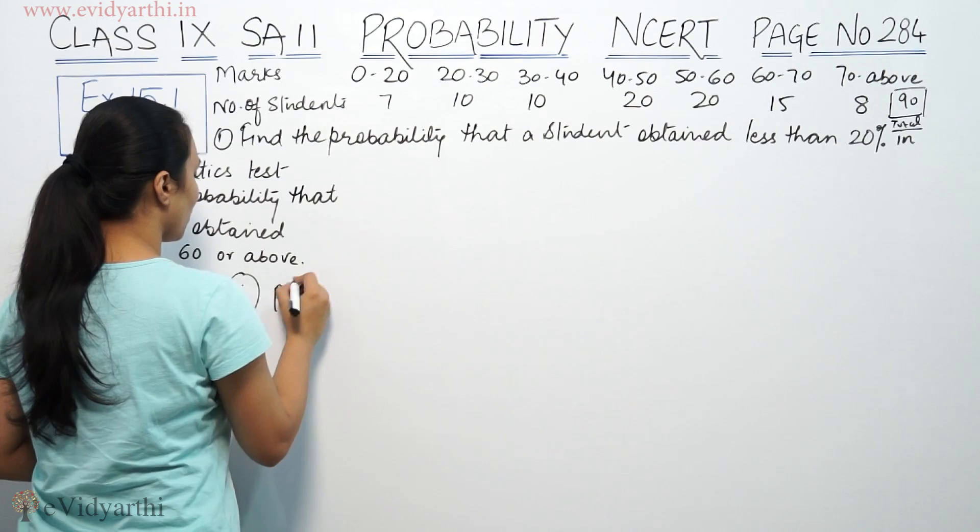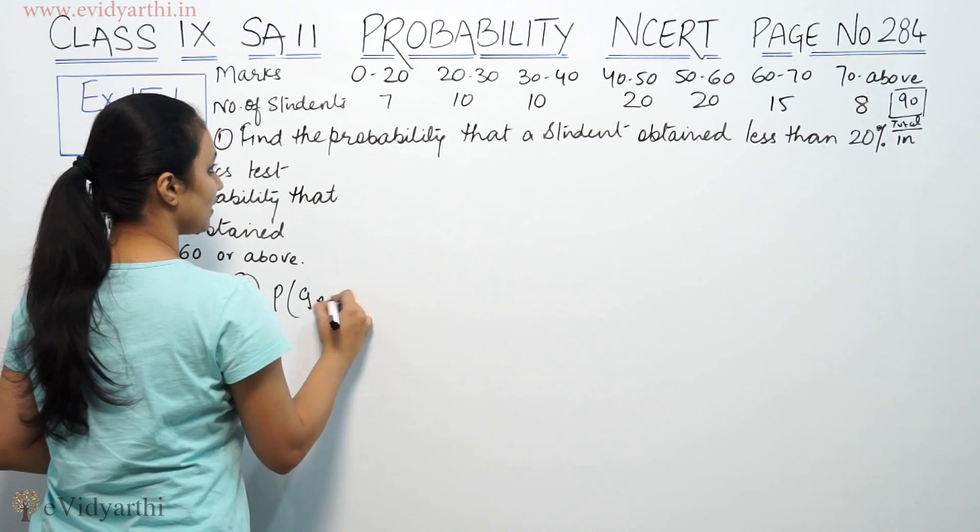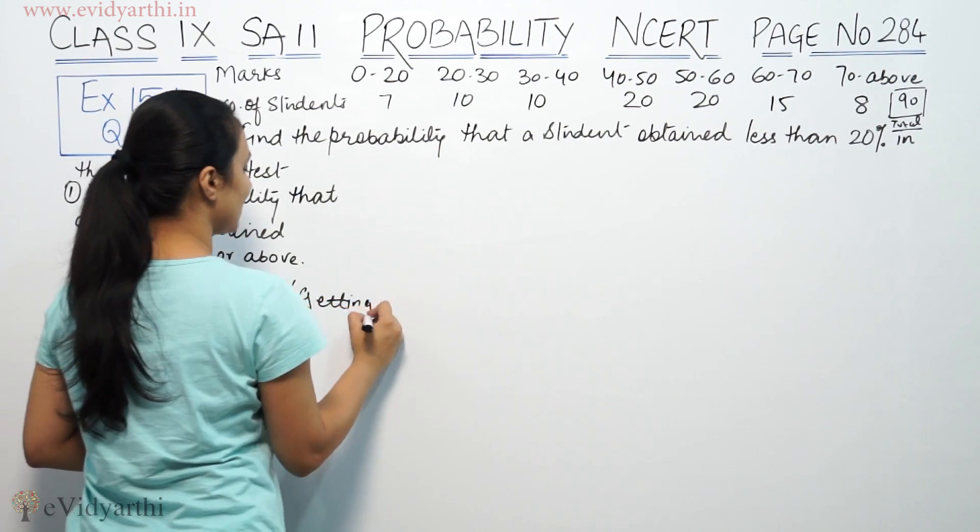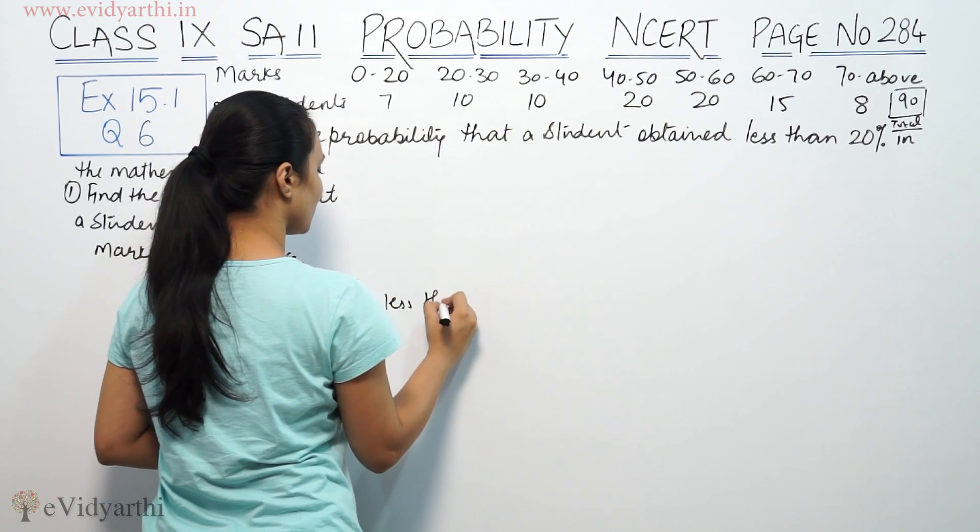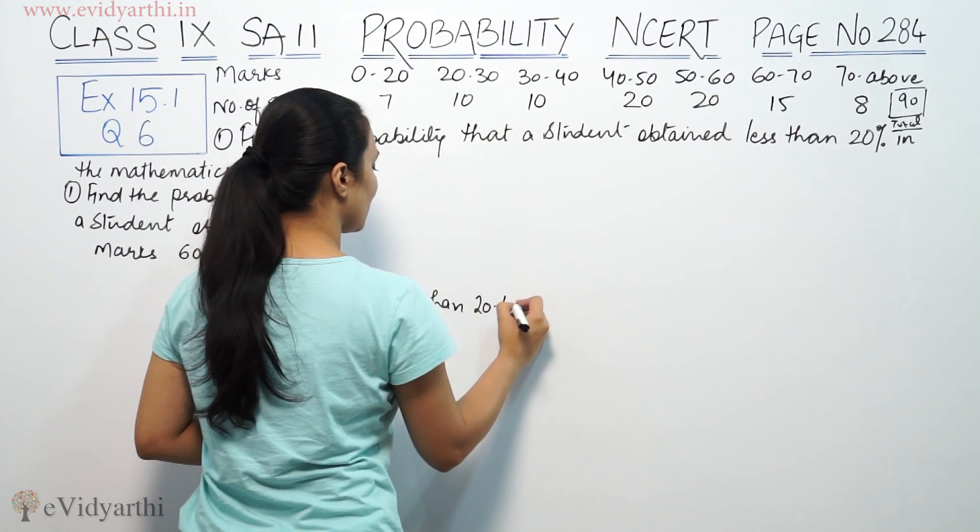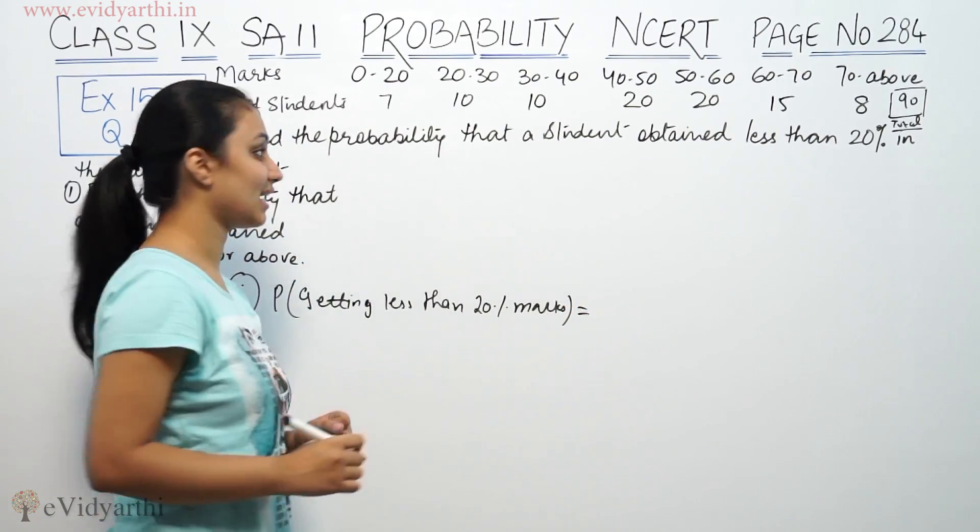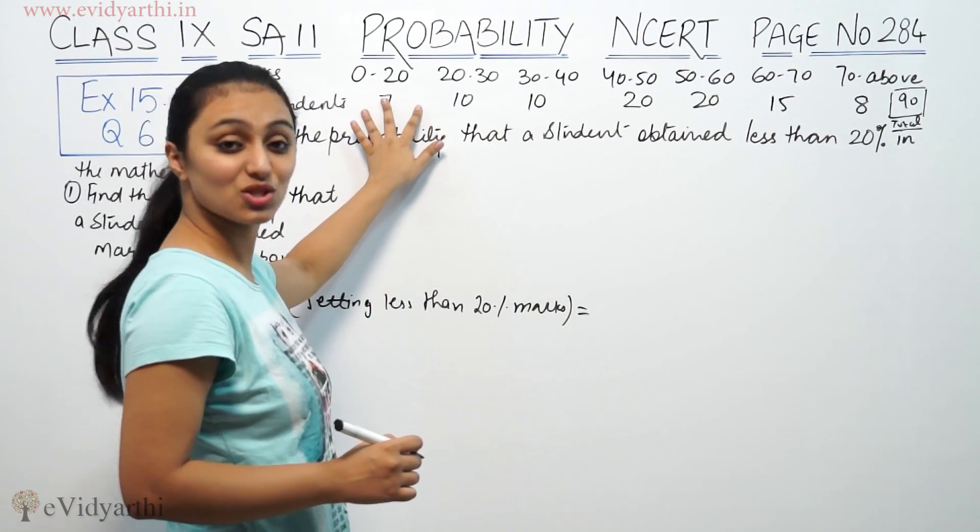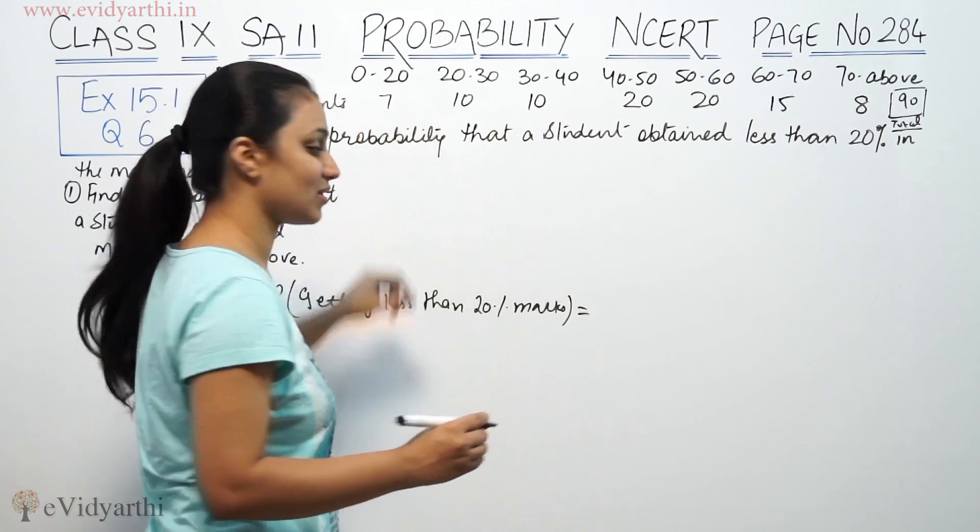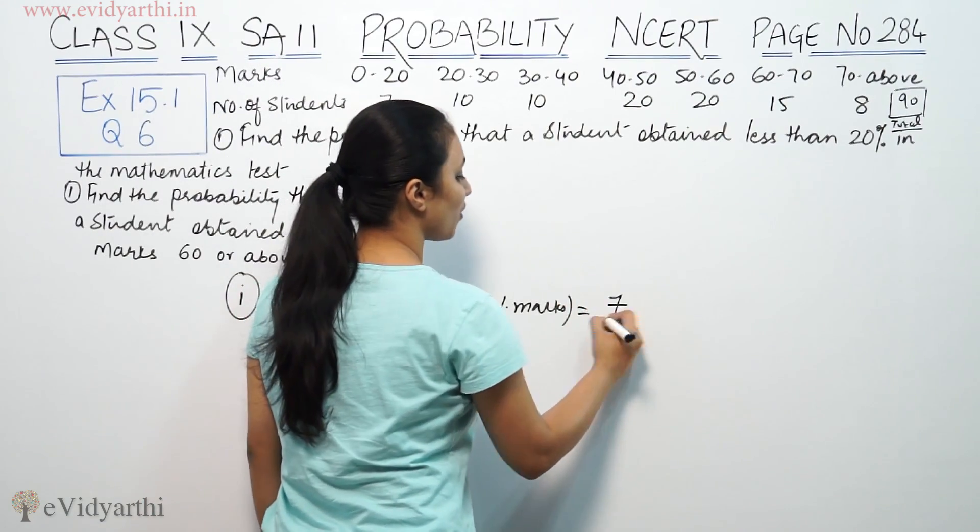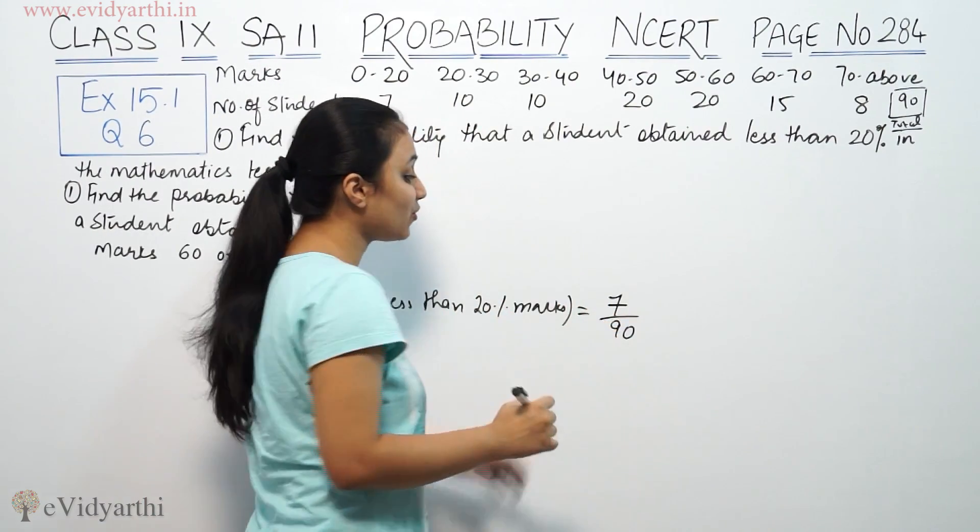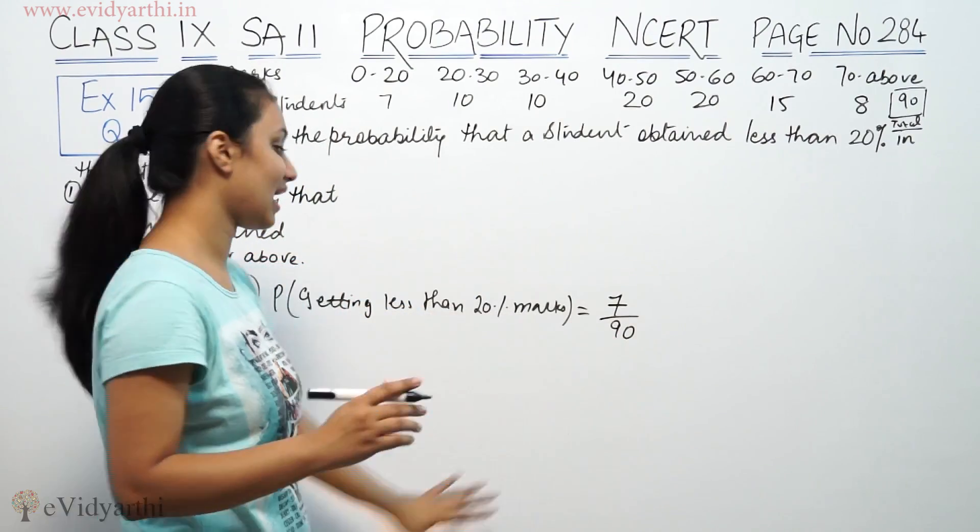In the first part, probability of getting less than 20% marks. So what are the favorable outcomes? Less than 20% means students obtaining less than 20%. That means 7 upon total is 90. The value cancels out, so this will remain 7 by 90.